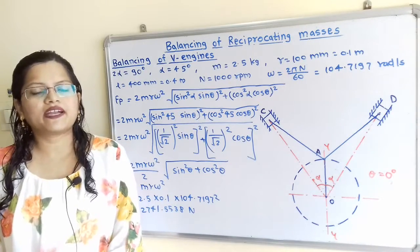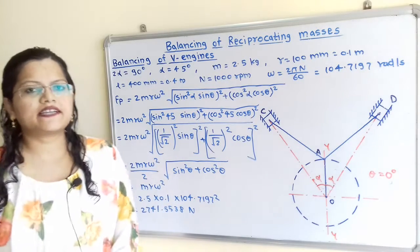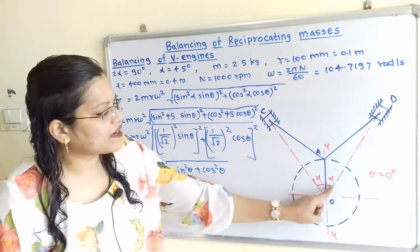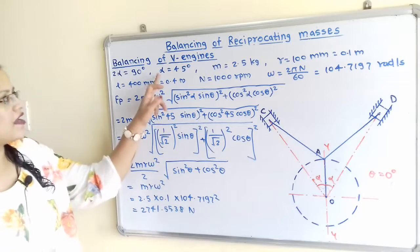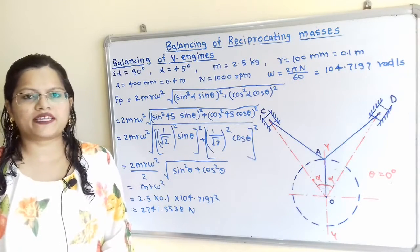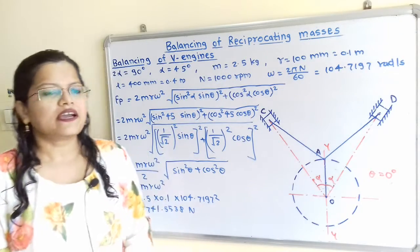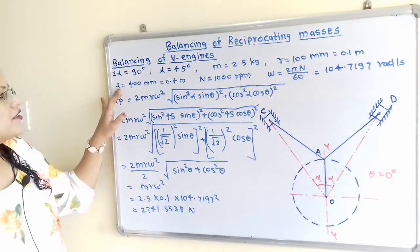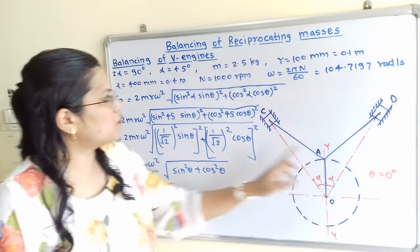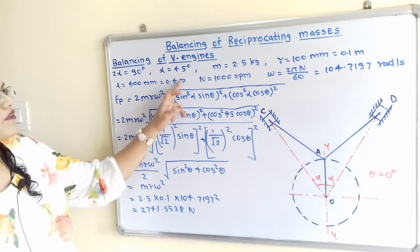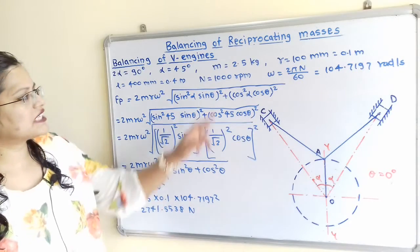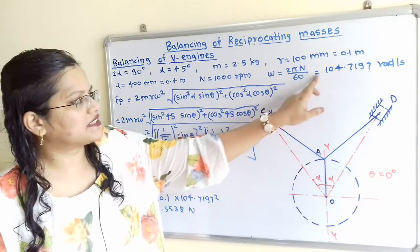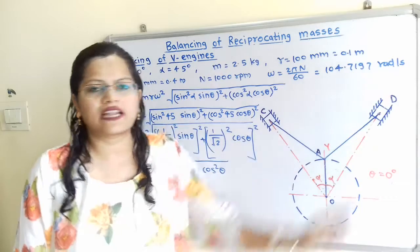From the given data: the angle between cylinder center lines 2α = 90°, so α = 45°. Mass of reciprocating parts m = 2.5 kg. Crank radius OA = 100 mm = 0.1 m. Length of connecting rod CA (or DA) = 400 mm = 0.4 m. Speed N = 1000 rpm, giving angular velocity ω = 2πN/60 = 104.7197 rad/s.